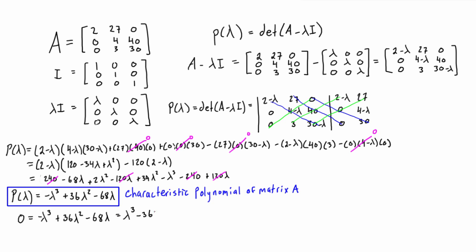So if we just simplify it in a few steps, we're going to find that the roots are 2, 34, and 0. And these are the eigenvalues of the matrix.